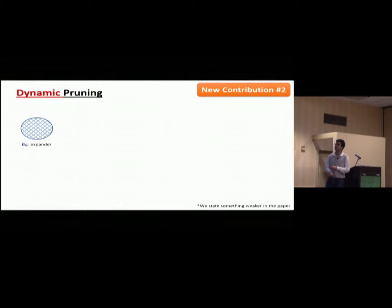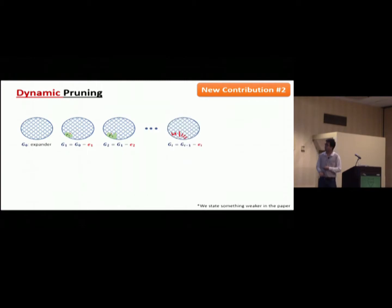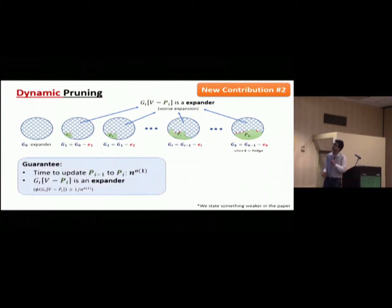So, so here the setting is the following. Suppose you have expander in the beginning. And then, you delete one edge. And this algorithm will output a set p1. And then you delete another edge, e2. It outputs p2. And so on. And such that the important property that we have is that the complement of pi on each graph will be expander. With some, with worse expansion. Okay? So, basically, this algorithm is the dynamic algorithm that updates this pruning set p. From p i-1 to the next p, to the next pi, in subpolynomial time. And such that the complement of each graph, of each p, is expander.